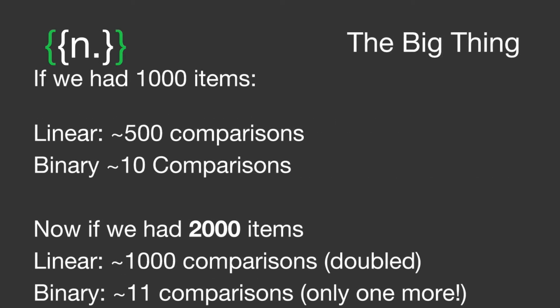So here's the big thing with binary search and this halving sort of nature of it. Let's compare linear and binary search. If we had a thousand items, linear search on average would take up to 500 comparisons, whereas binary would take only up to 10.